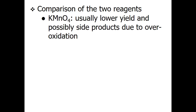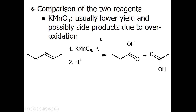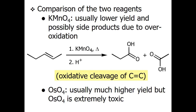Comparing KMnO4 and osmium tetraoxide: KMnO4 usually gives a lower yield and possibly side products due to over-oxidation, while osmium tetraoxide gives a much higher yield. However, the problem with osmium tetraoxide is that it is extremely toxic.